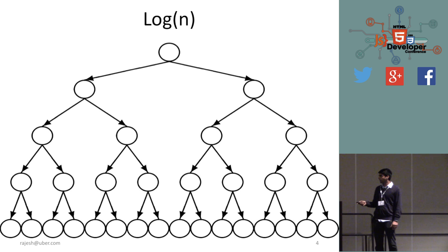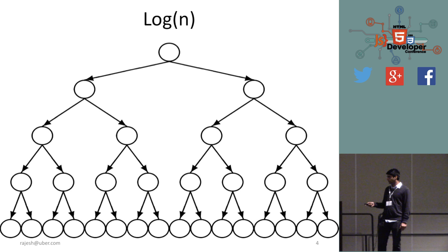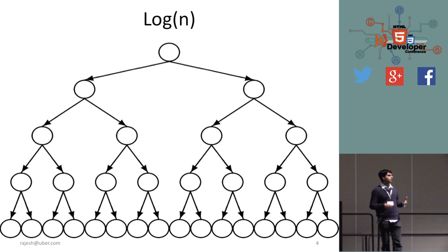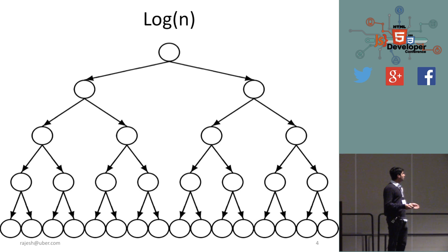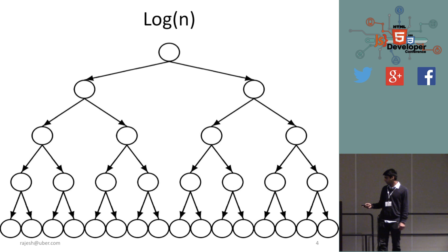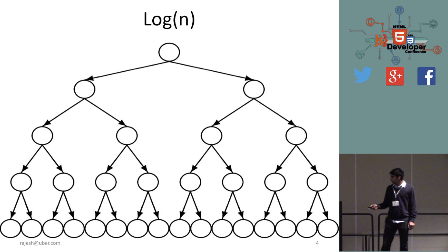At time stamp two, there are two cells. At time stamp three, there are four cells. At time stamp four, there are eight, then 16. This is called exponential growth — every time we are doubling. And if you think about log n, it's just the opposite.